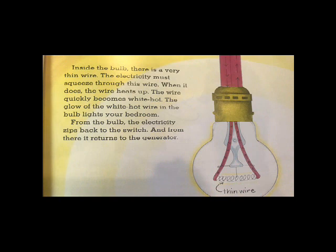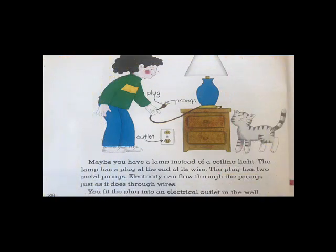Inside the bulb, there is a very thin wire. The electricity must squeeze through this wire. When it does, the wire heats up. The wire quickly becomes white hot. The glow of the white hot wire in the bulb lights your bedroom. From the bulb, the electricity zips back to the switch and from there it returns to the generator.